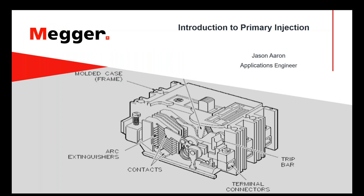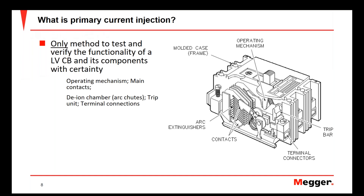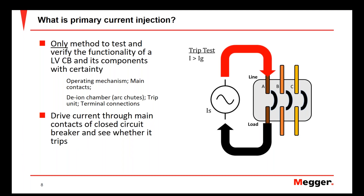Let's dive into our primary injection section. Primary current injection is the only method we can effectively use to do a functional test on circuit breakers and some other components. It is the only method that we can use to verify that all the mechanisms within a circuit breaker are going to operate as intended whenever it's in use in a real-world scenario.